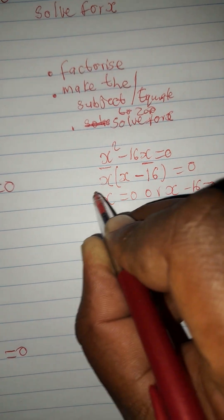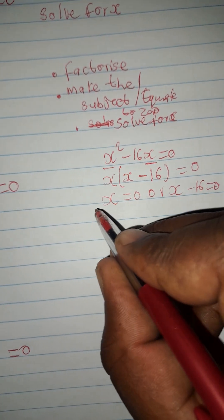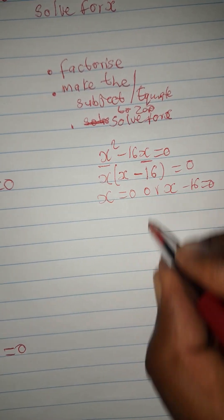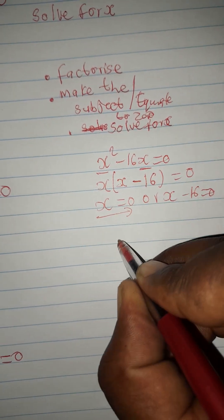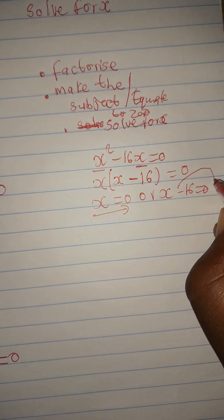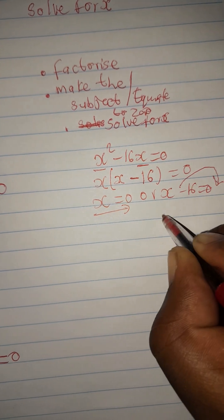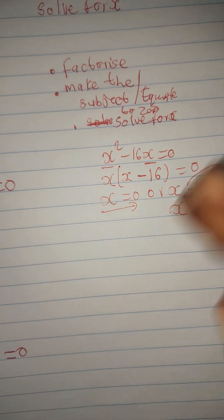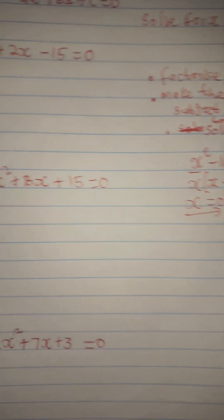What did I do here? First, I factorized — meaning you find the factors that make this expression. To get x squared, we need x times x. To get 16x, we need x and negative 16. So equate to zero. x is already the subject here. For x minus 16, take 16 to the right-hand side; when you take negative 16 to the right-hand side, it becomes positive 16, which is the same as zero plus 16.